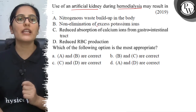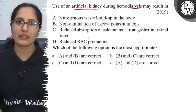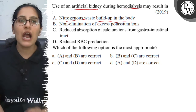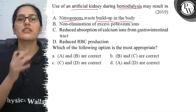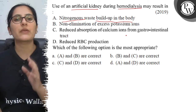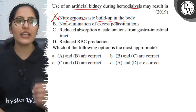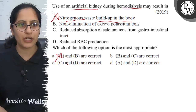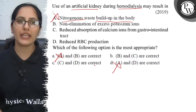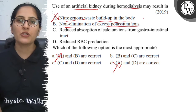So during hemodialysis, the artificial kidney does the work a normal kidney was doing. Nitrogenous waste build up in the body? No — the artificial kidney will eliminate nitrogenous waste from the body, so it cannot accumulate. Therefore, Option A is completely incorrect. Since A is incorrect, both options A and D (which contain A) are cancelled.